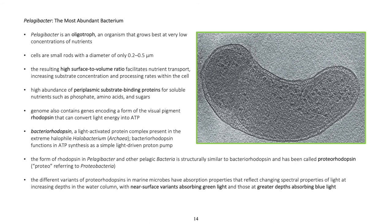Pelagibacter is the most abundant bacterium. It is an oligotroph — an organism that grows best at very low concentrations of nutrients. Cells are small rods with a diameter of only 0.2 to 0.5 micrometers. The resulting high surface-to-volume ratio facilitates nutrient transport, increasing substrate concentration and processing rates within the cell. High abundance of periplasmic substrate-binding proteins for soluble nutrients such as phosphate, amino acids, and sugars.